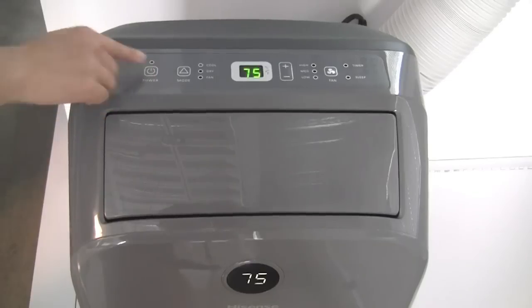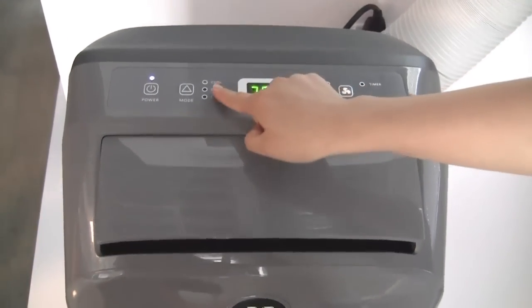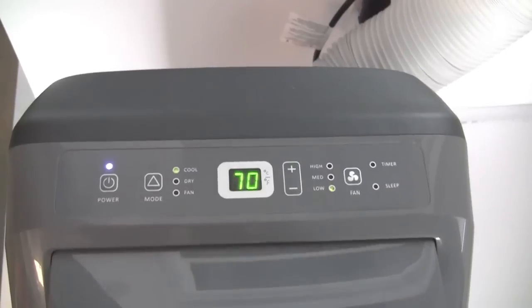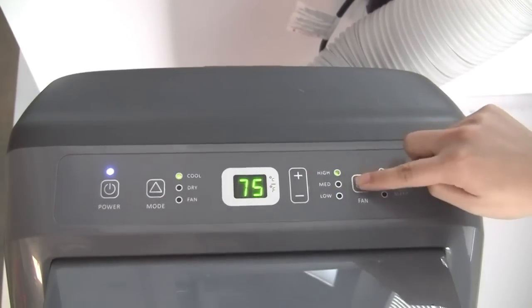Press the Power button and make sure the Cooling Mode light is activated. Under Cooling Mode, you can adjust the fan speed in High, Medium, and Low by pressing the Fan button.